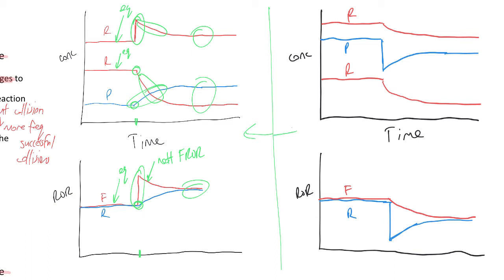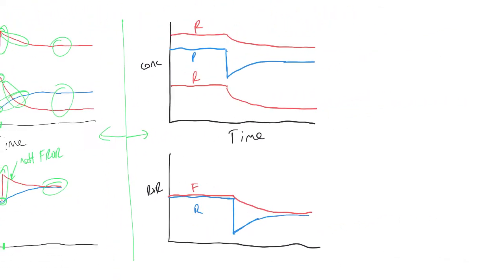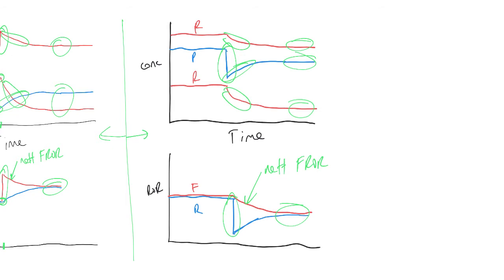Now looking at the right-hand side: instead of adding something, we're removing something — we're removing some of the products. If you remove some of the products, you reduce the reverse rate of reaction because there are less frequent collisions between the products. Reducing that reverse rate of reaction means there is a net forward reaction, even though the forward rate of reaction hasn't changed.